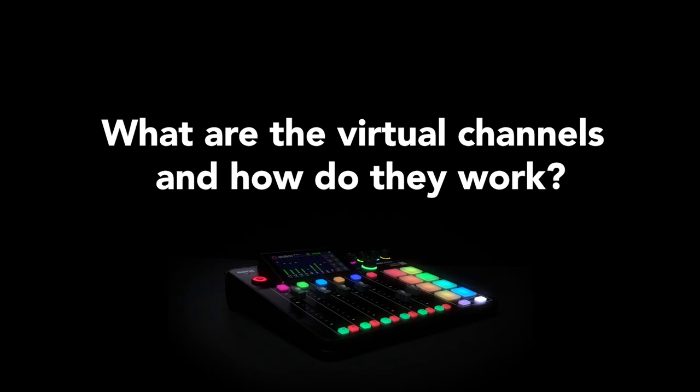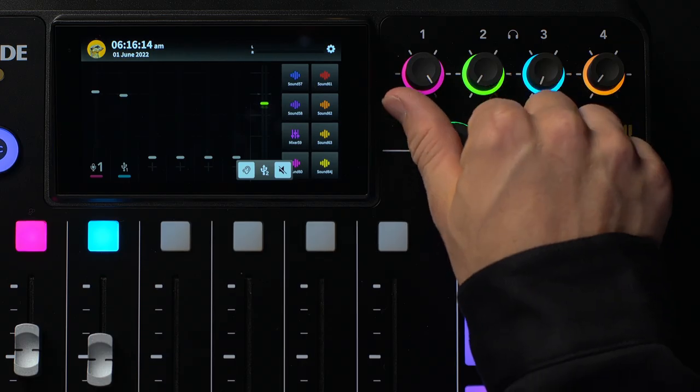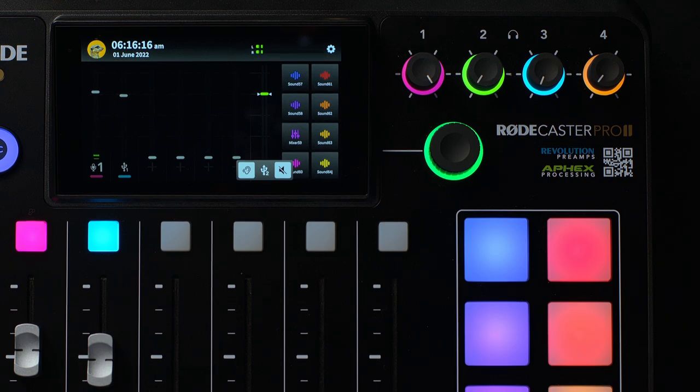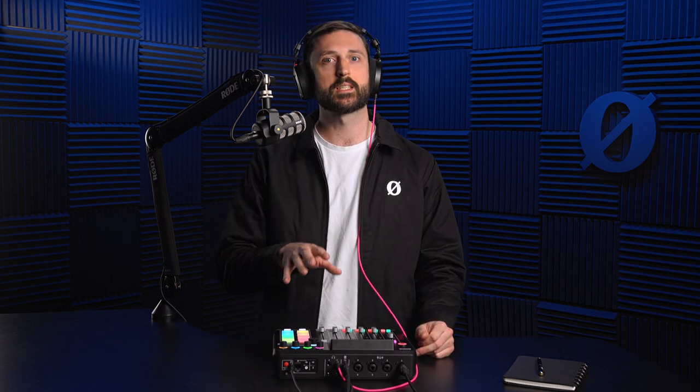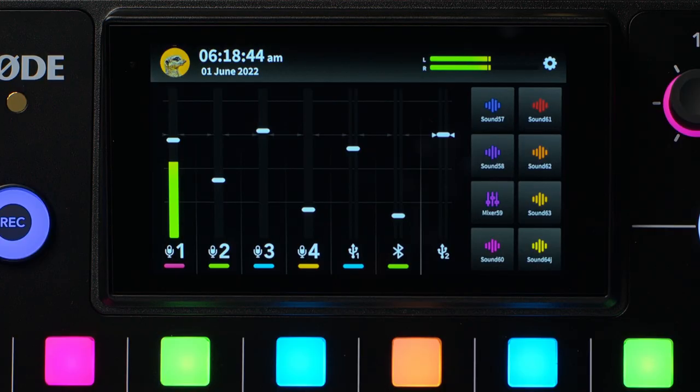What are the virtual channels and how do they work? The virtual faders are exactly the same as the faders on the mixer, only you have a digital slider controlled by the rotary encoder. This allowed us to make the Rodecaster Pro 2 even smaller than the original without sacrificing audio channels. In fact the Rodecaster Pro 2 has more channels than the original despite being quite a bit smaller.